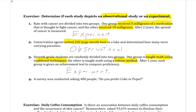That's just a side note — things to think about in how studies are done. Lastly, a survey was conducted asking people, do you prefer Coke or Pepsi? They just asked people — they didn't give them Coke or Pepsi and say which one do you like better. They just asked which one they prefer. So this is an observational study.